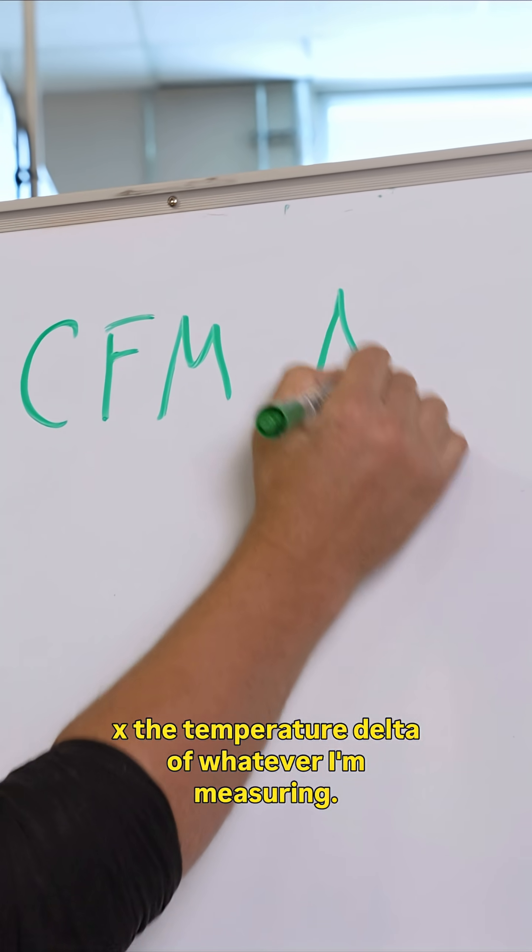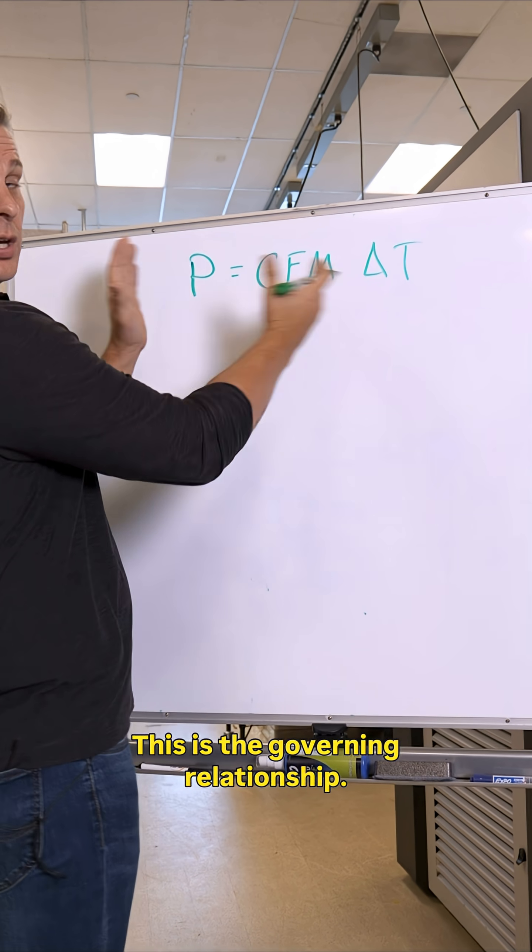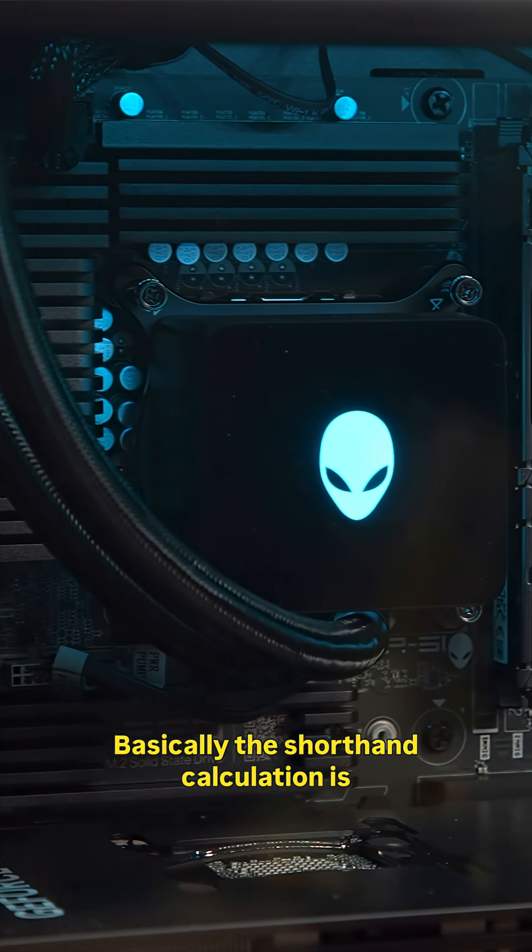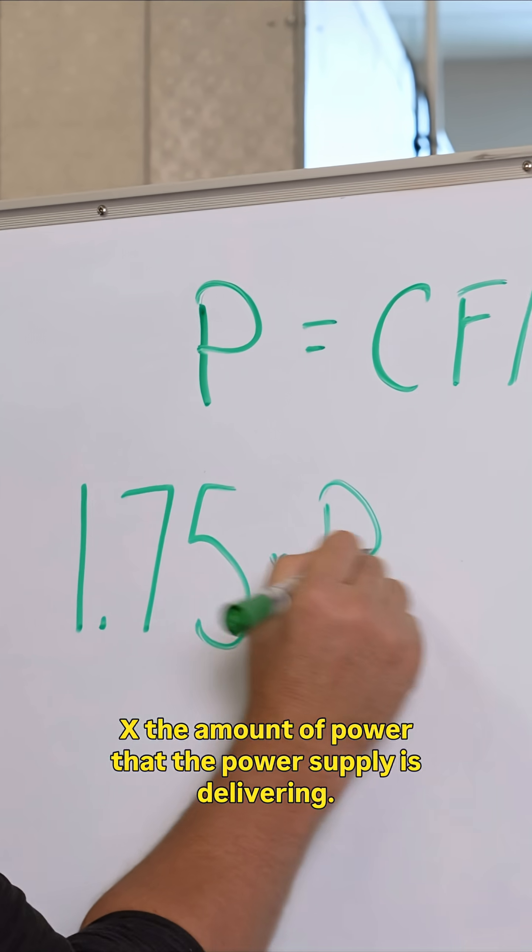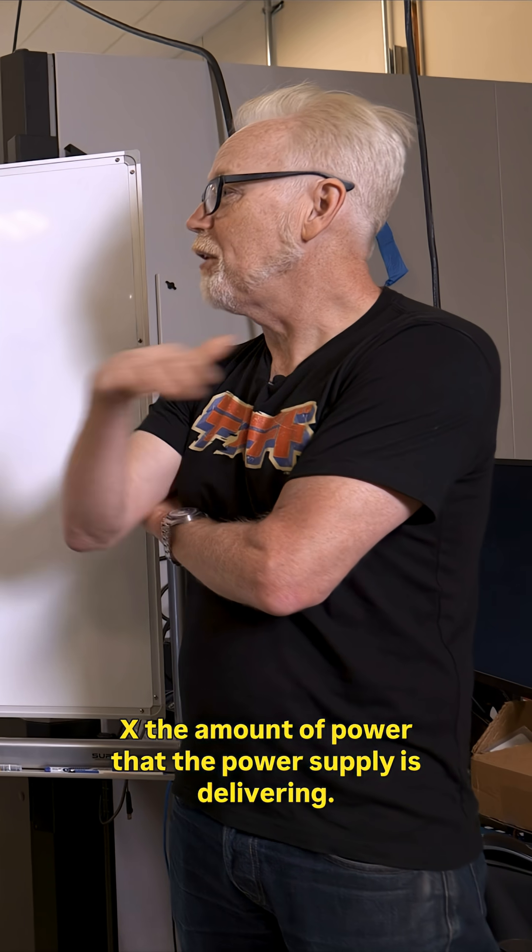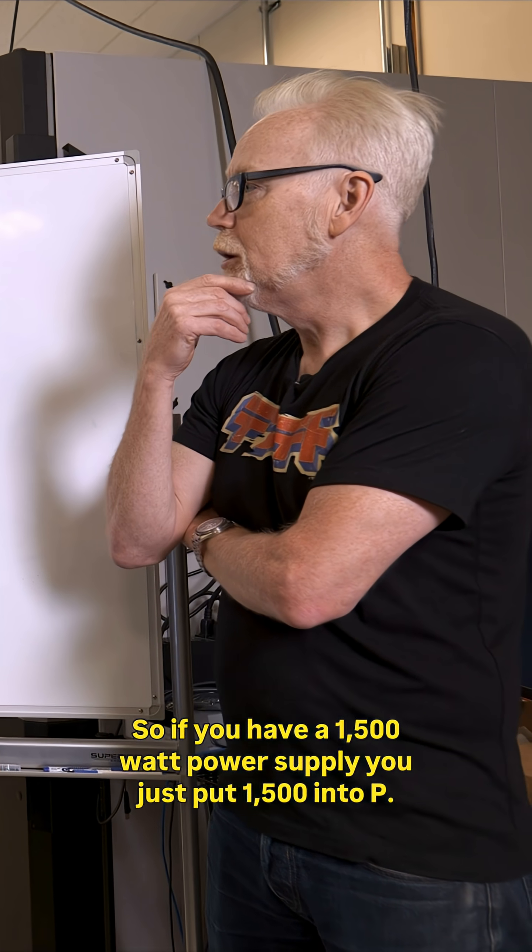Times the temperature delta of whatever I'm measuring. This is the governing relationship. The shorthand calculation is 1.75 times your power P, the amount of power that the power supply is delivering. So if you had a 1500 watt power supply, you just put 1500 into P.